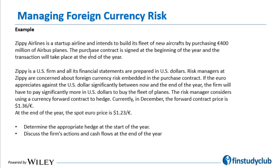First example: Zippy Airlines is a startup airline intending to build its fleet by purchasing 400 million euros of Airbus planes. The contract is signed at the beginning of the year and the transaction takes place at the end of the year. Zippy is a U.S. firm with financial statements in U.S. dollars. If the euro appreciates over time, it would have to shell out much more in U.S. dollar terms. Risk managers at Zippy are concerned about foreign currency risk embedded in the purchase contract.